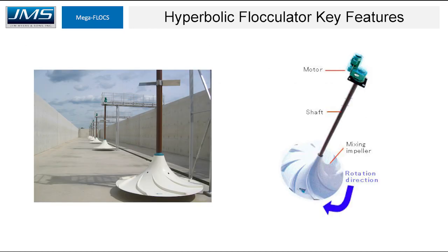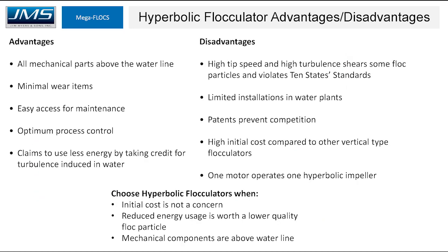Hyperbolic flocculators have a distinct design at the bottom with a shaft into a gearbox that accommodates all axial and radial forces. These flocculators create a specific type of turbulence in the basin. Manufacturers take credit for the drag coefficient and the relative velocity of all the turbulence created. Some advantages are that all mechanical parts are above the waterline, minimal wear items, easy access for maintenance, and optimum process control because each drive speed can be adjusted. There are also some claims of lower energy use.